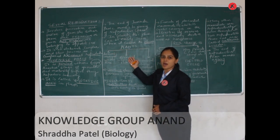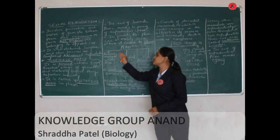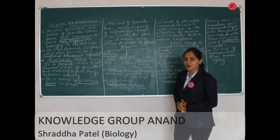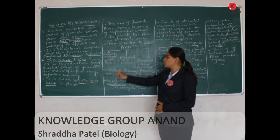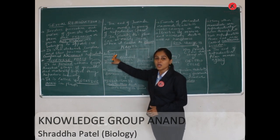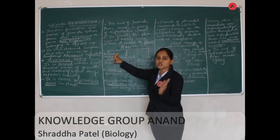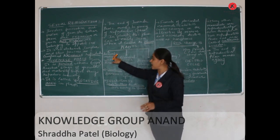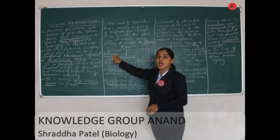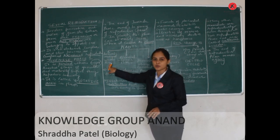The three categories are annual plants, biennial plants, and perennial plants. Annual plants produce flowers in one growing season only — they undergo juvenile phase, reproductive phase, and then die. Examples of annual plants are marigold and rice.